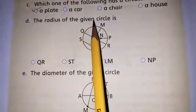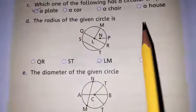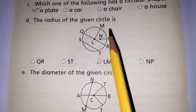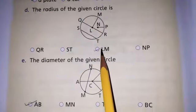The radius of the given circle is what? QR, ST, LM and NP. Check it. The radius of the circle is LM. Tick LM.